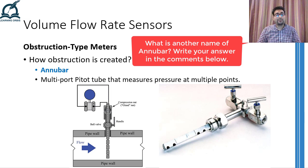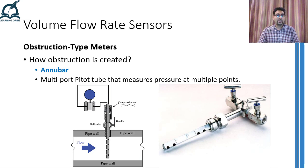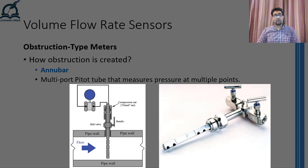This was everything about the obstruction type flow meters. With the hope that you have understood the basic working principle and basic structure of various obstruction type flow meters used in industry, I would like to end this video. In the next video, I will discuss volume flow rate sensors that utilize some other method other than creating an obstruction to measure the flow rate. Thank you and take care.